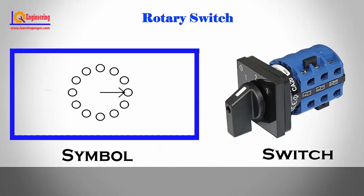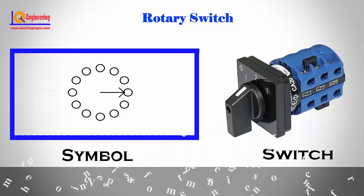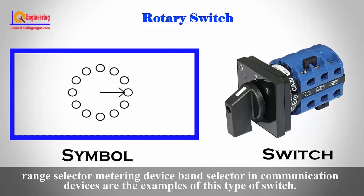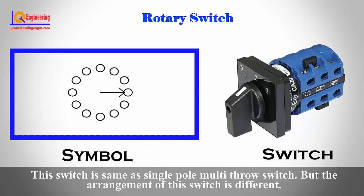Rotary switch. This type of switch is used to connect one line with one of many lines. Examples include the knob of a multimeter, channel selector, range selector, metering device, band selector, and communication devices. This switch is the same as a single pole multi-throw switch, but the arrangement of this switch is different.